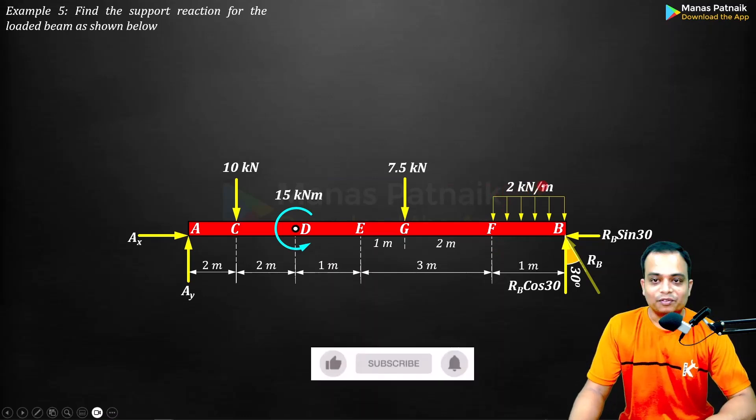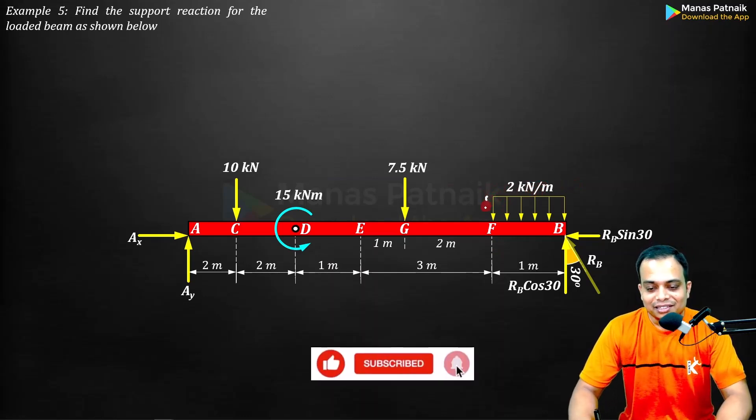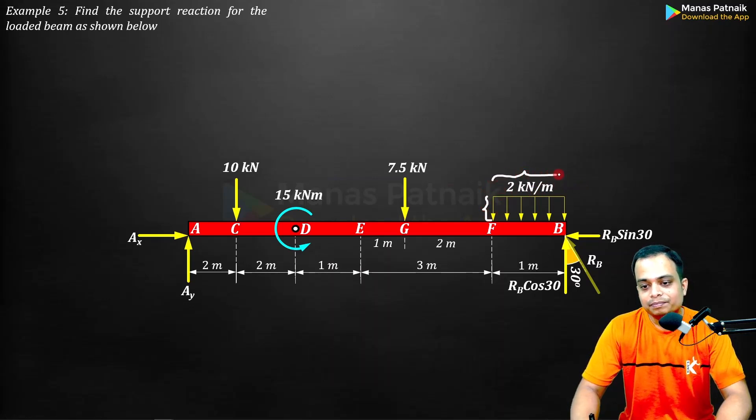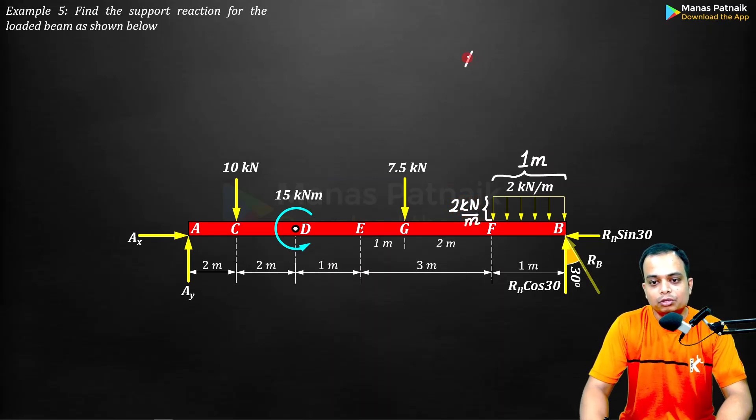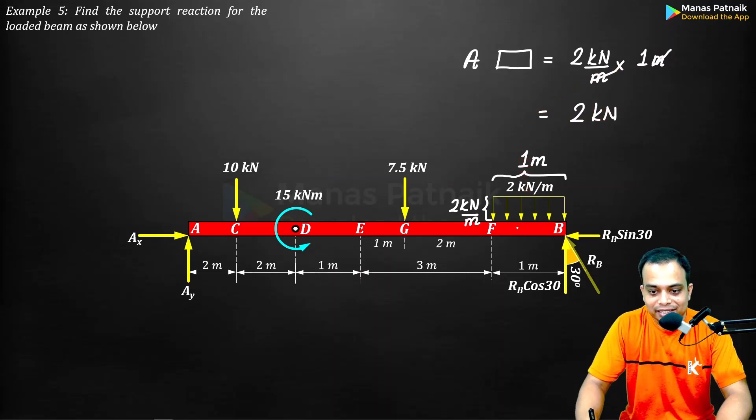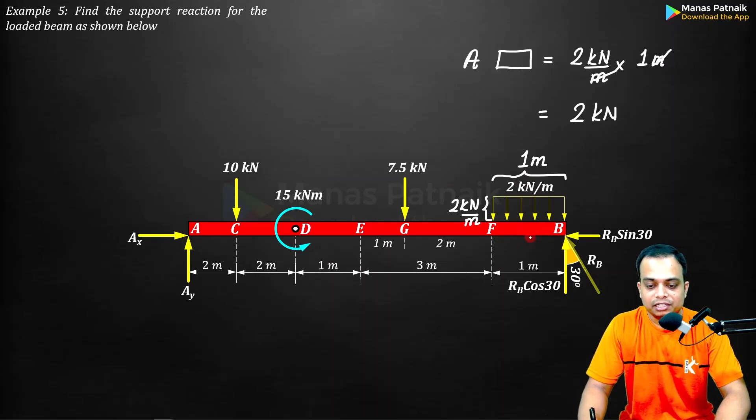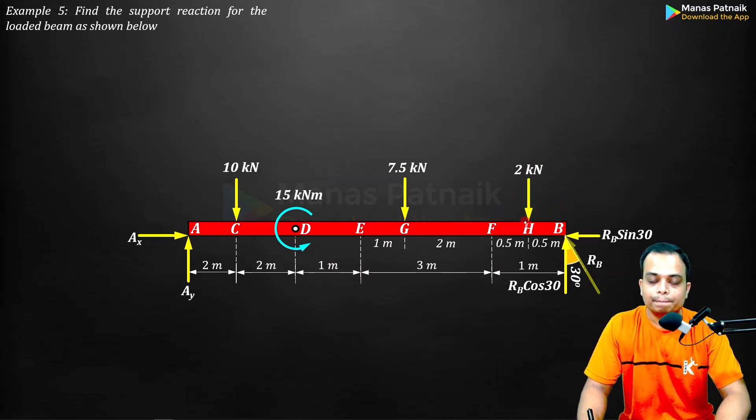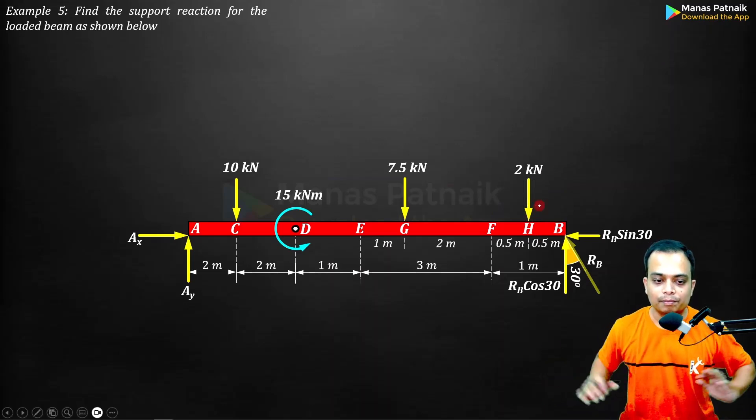Dealing with uniformly distributed loads is very easy. This is the height of the rectangle and that's the base of the rectangle. Base of the rectangle is simply one meter, height of the rectangle is two kilonewtons per meter. The area of the rectangle is equal to two kilonewtons per meter multiplied by one meter, which equals two kilonewtons. This is going to act right at the center of FB, half distance either from F or from B.